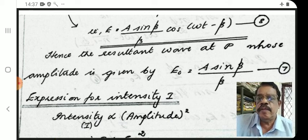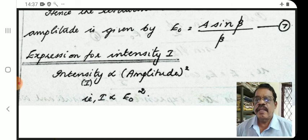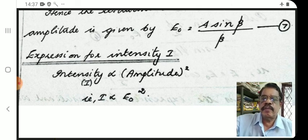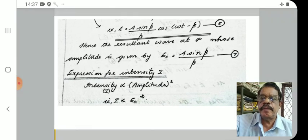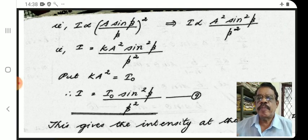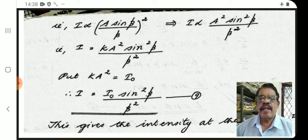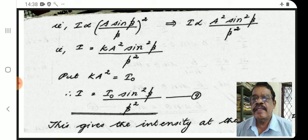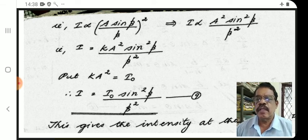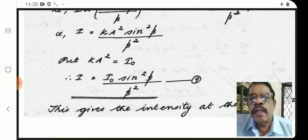For intensity, intensity is proportional to the square of amplitude, that is I ∝ E₀². Substituting E₀, we get I ∝ (A·sinβ/β)². Replacing the proportionality with a constant k, we write I = k·A²·(sinβ/β)². Setting k·A² = I₀, we obtain I = I₀·sin²β/β². This is equation number 9.